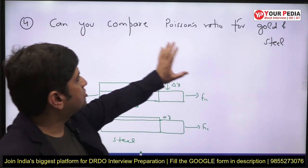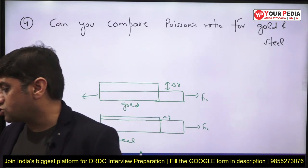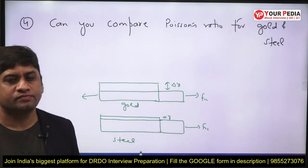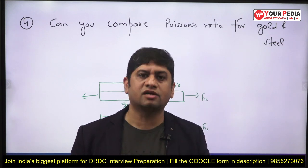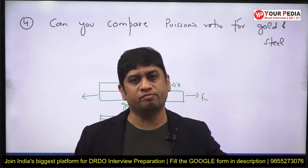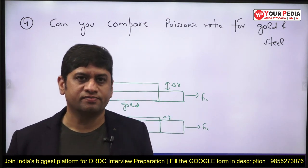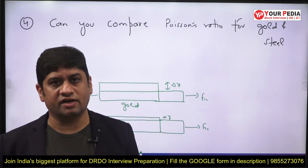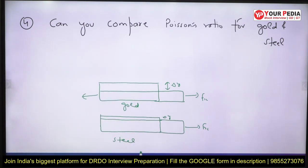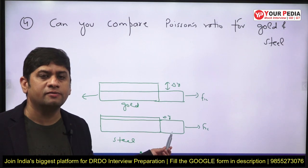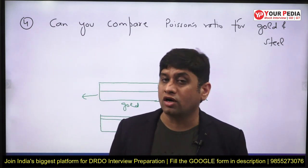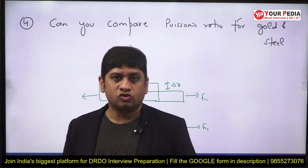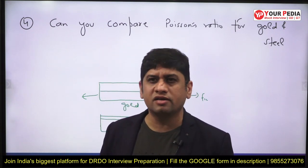Then they may ask you to compare Poisson's ratio of steel and gold — not tell the value but compare it. Gold and silver are very malleable materials, meaning stretching is possible. If you apply force, they will stretch out in the lateral direction. So for the same longitudinal strain epsilon x, the lateral strain is much more in gold. That is the reason gold and silver are used in jewelry and ornaments.